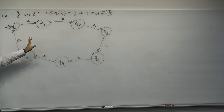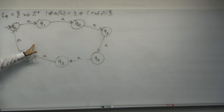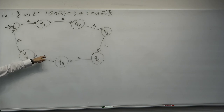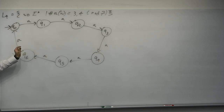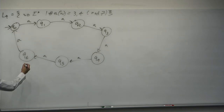If a string ever lands on Q1, it means it's seen one A mod 7 — could be 1, 8, 15, or any 1 mod 7 number of A's. You could go around the clock many times, but if you land on Q1, you've seen one A mod 7. What happens if we see a B? We ignore them — self-loops on every state.